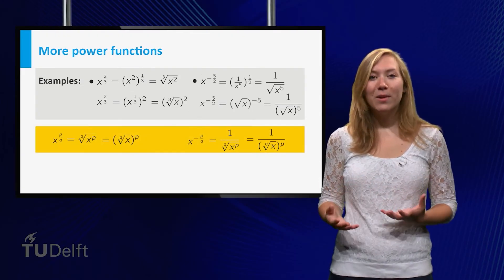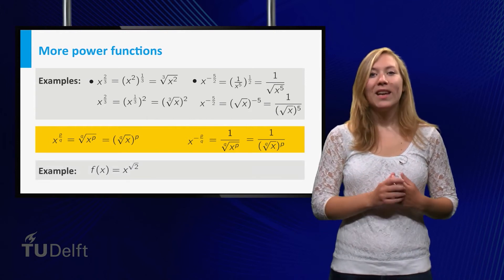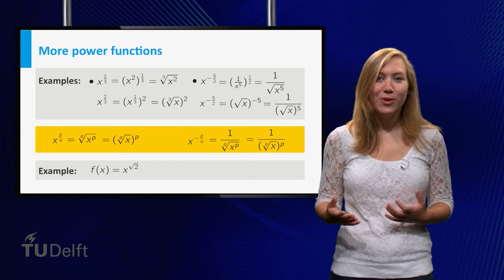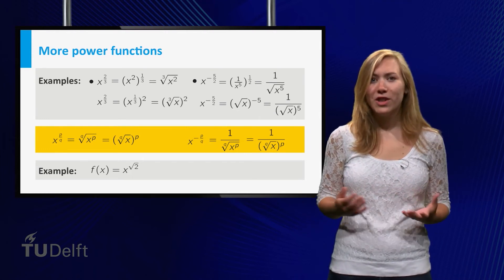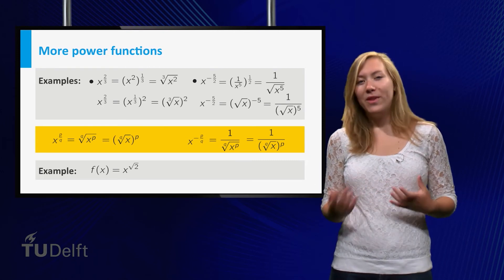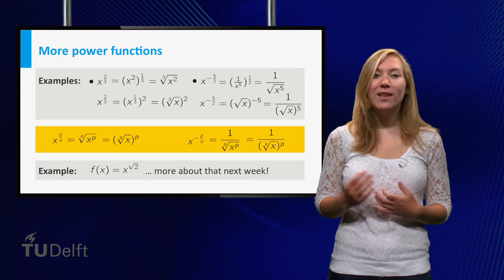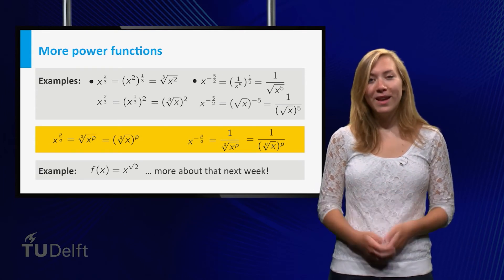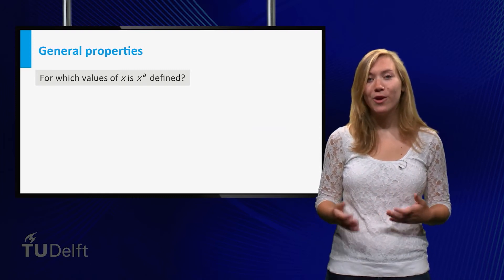Not every number is a quotient though. For example, square root of 2 cannot be written as a fraction of two integers. How do you define power functions for such exponents? This is a bit tricky, and we will return to this in the next week when dealing with exponential functions. However, I will show you the properties of power functions for general exponents.